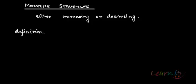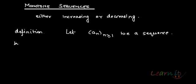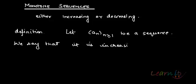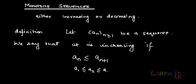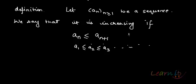Formally, the definition of monotone sequences: if a_n is some sequence, we say that it is increasing when each and every term is increasing. That means a_1 should be less than or equal to a_2, and a_2 should be less than or equal to a_3. This means the terms are in increasing order, and this holds for all n greater than or equal to 1.